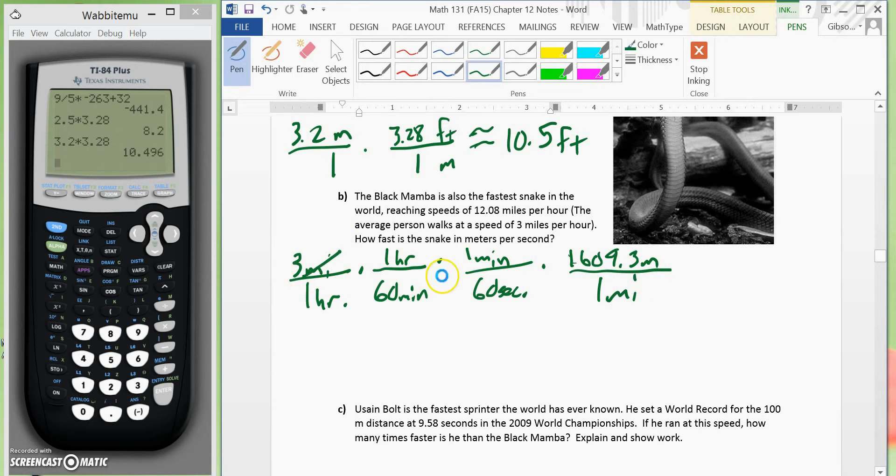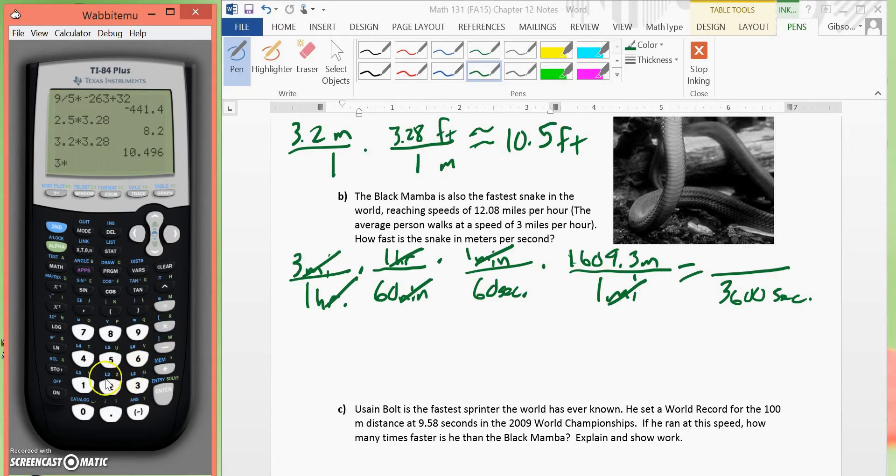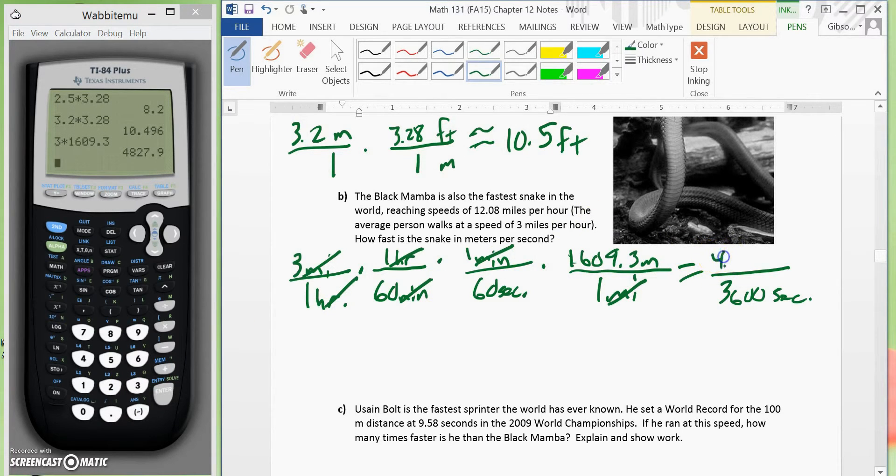So now we simplify out. We have miles with miles. We have minutes with minutes and hours with hours. So now we want to block. Our denominator would be 3,600. And that would be seconds. Our numerator would take 3 times 1,609.3. And that would give us 4,827.9.